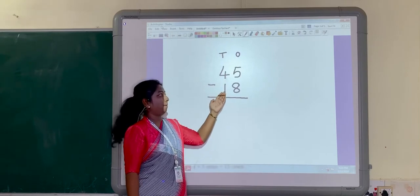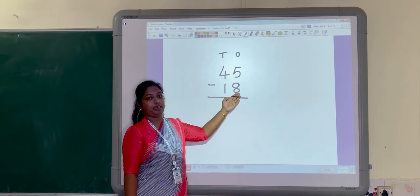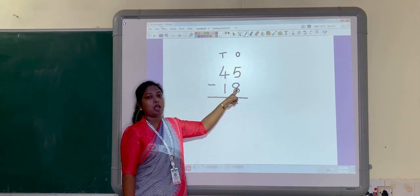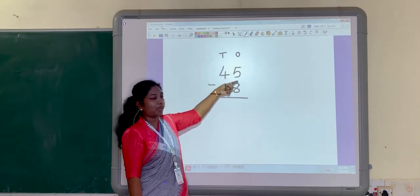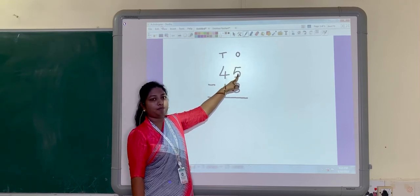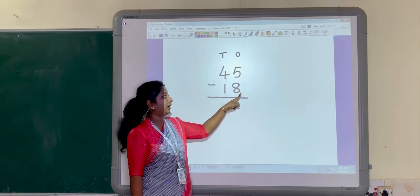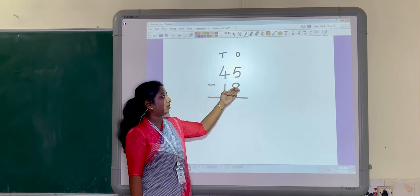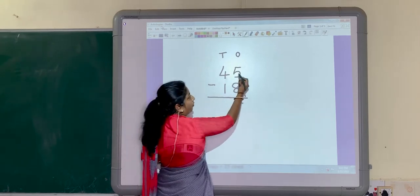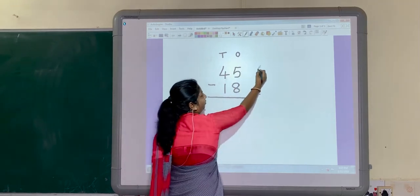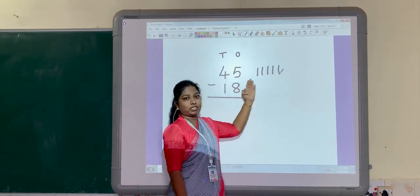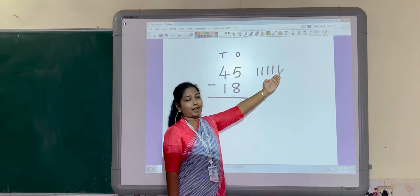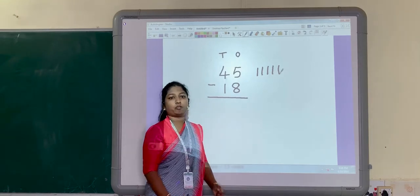Now how to borrow in numbers? This is the word sum 45 minus 18. See, this is the bigger number 45 and this is the smaller number 18. But always what we do? We solve the ones part first. So, in our ones part, what is the number? 5 and 8. The 5 number is on the top and the 8 number is below that. So, here 5 minus 8. Can we do that? Can we cut 8 lights from these 5 lights? No. It is not possible.